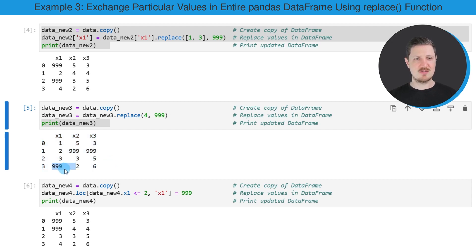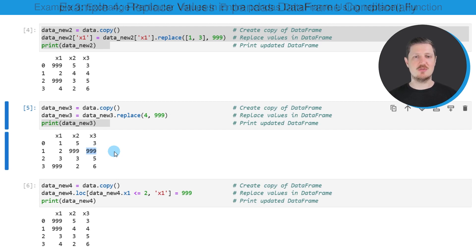So in this case, this value appeared here, here and here. So as you have seen in the previous example, it's possible to use the replace function to replace certain values in a data set. However, it's also possible to substitute ranges in a data set based on a logical condition.